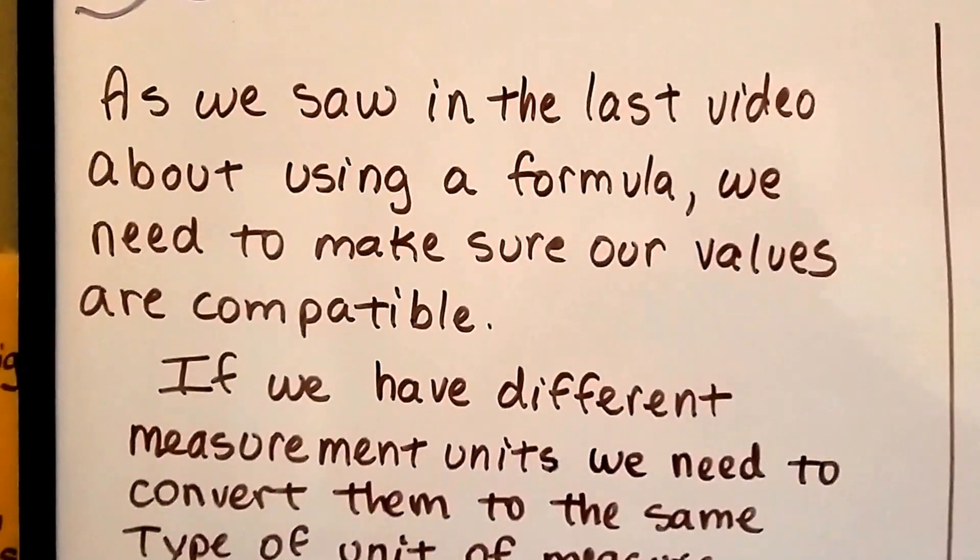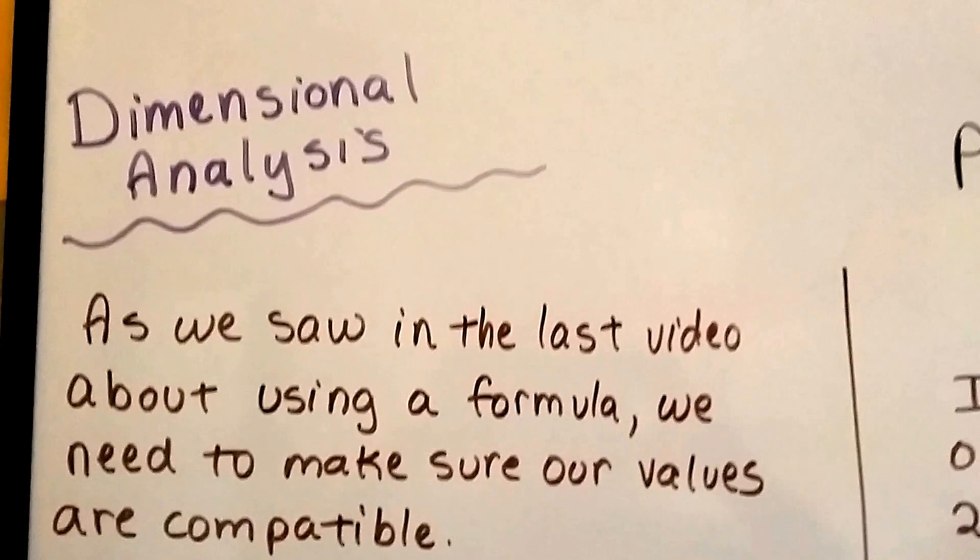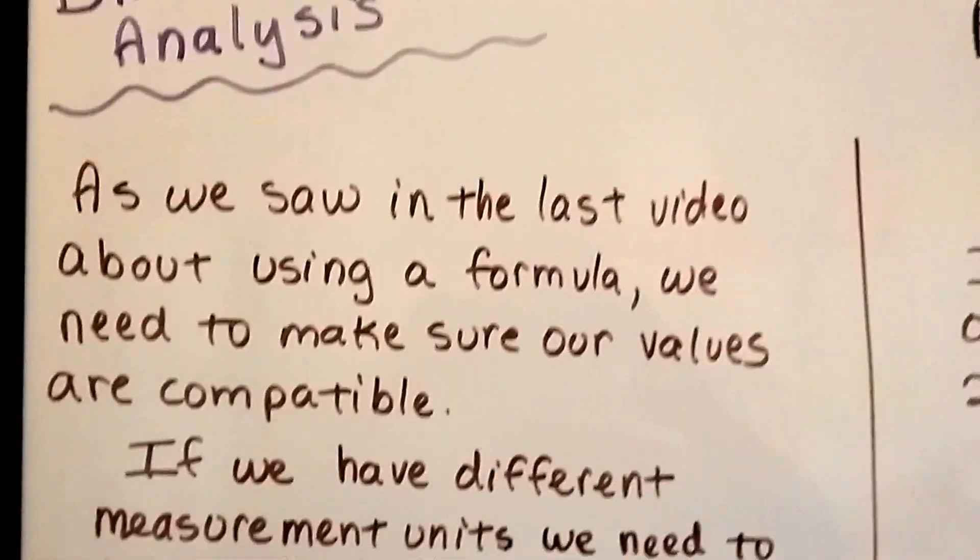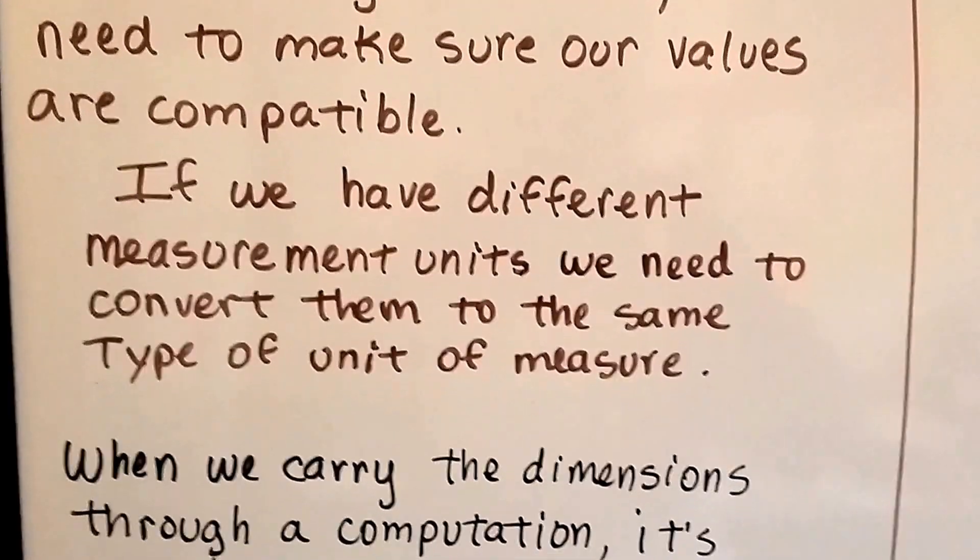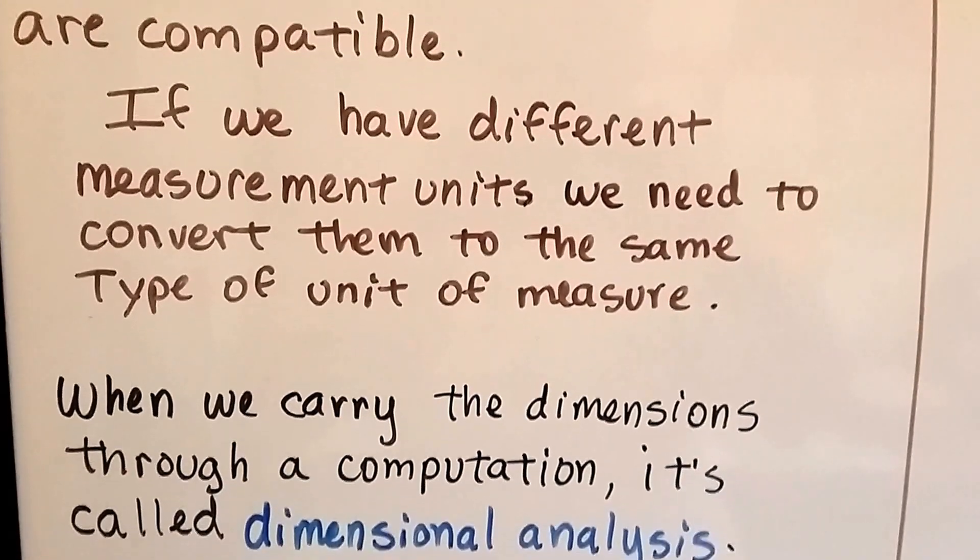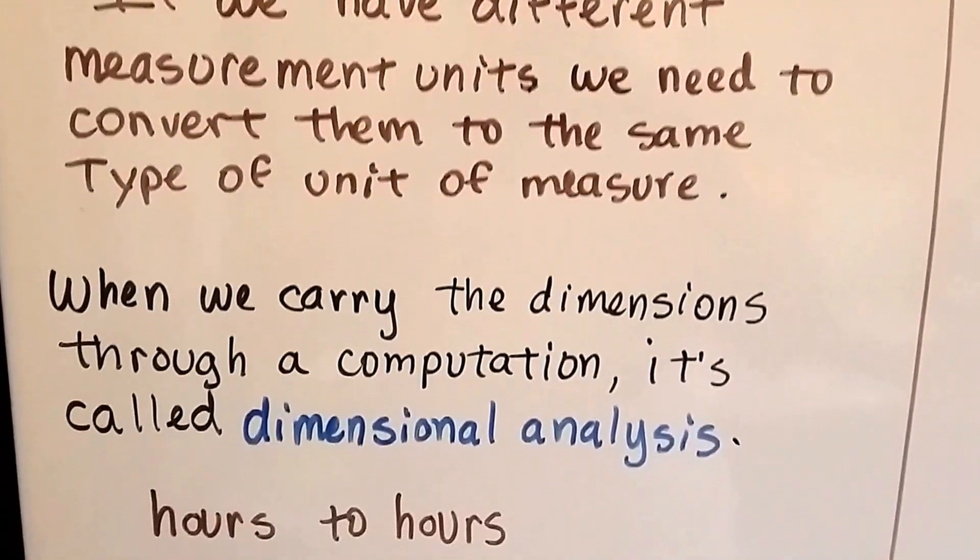As we saw in the last video about using a formula, we're in 1.9b, that was 1.9a. We need to make sure our values are compatible. If we have different measurement units, we need to convert them to the same type of unit of measure.